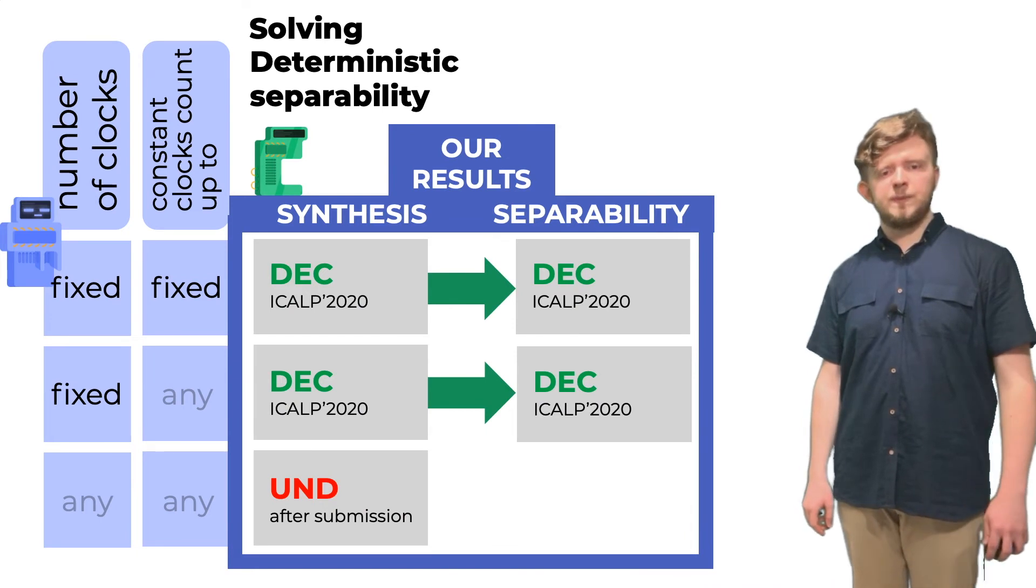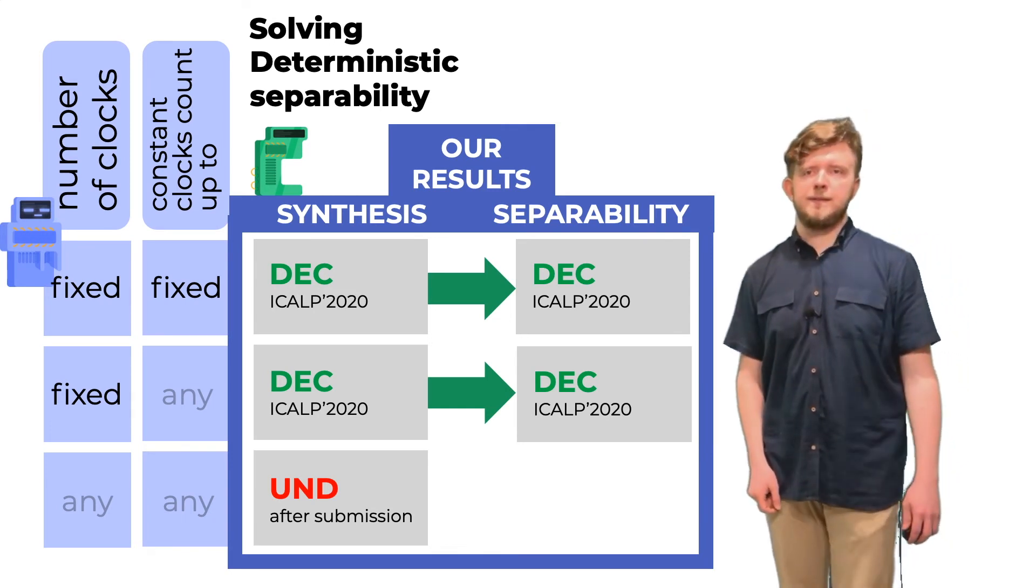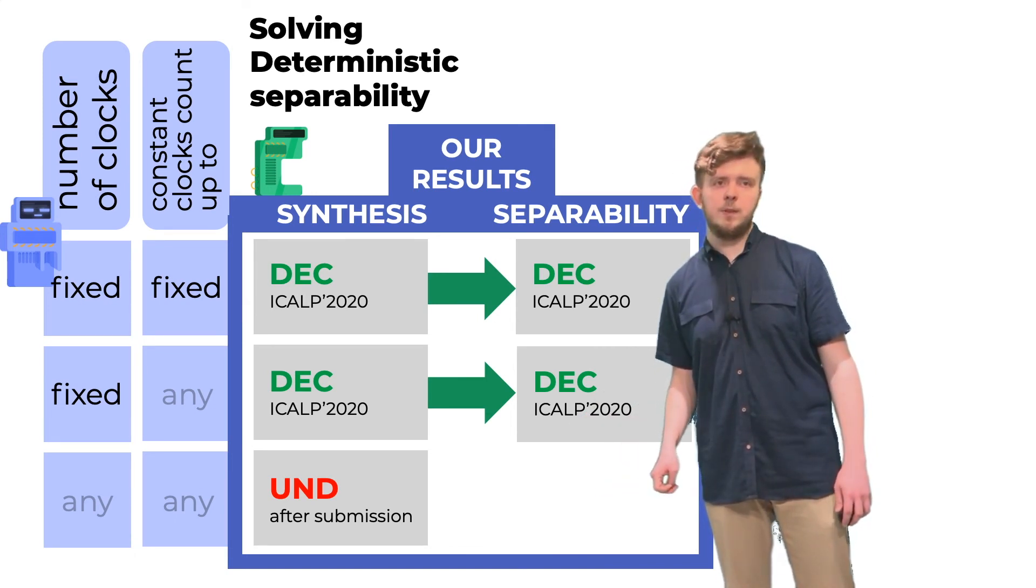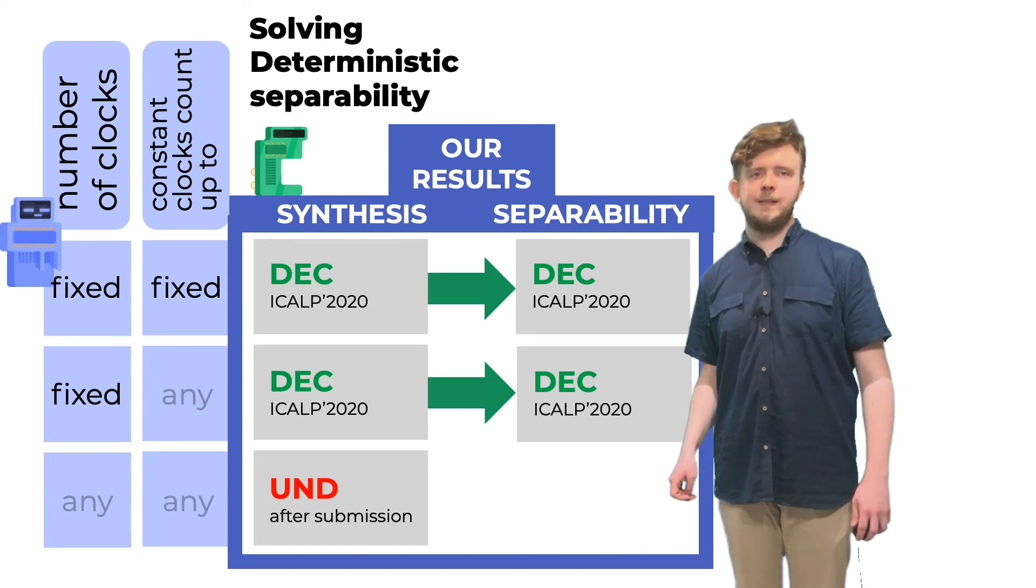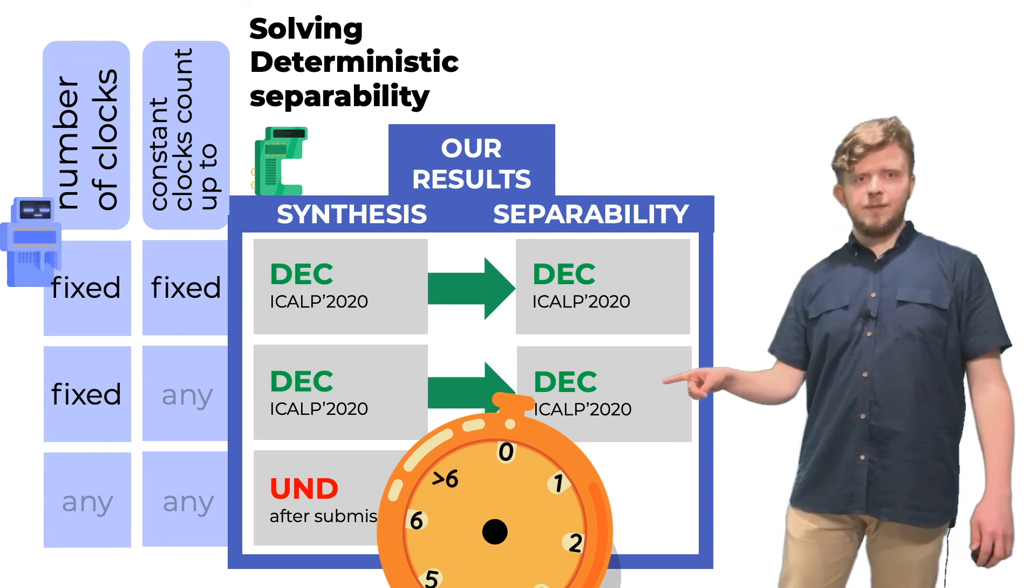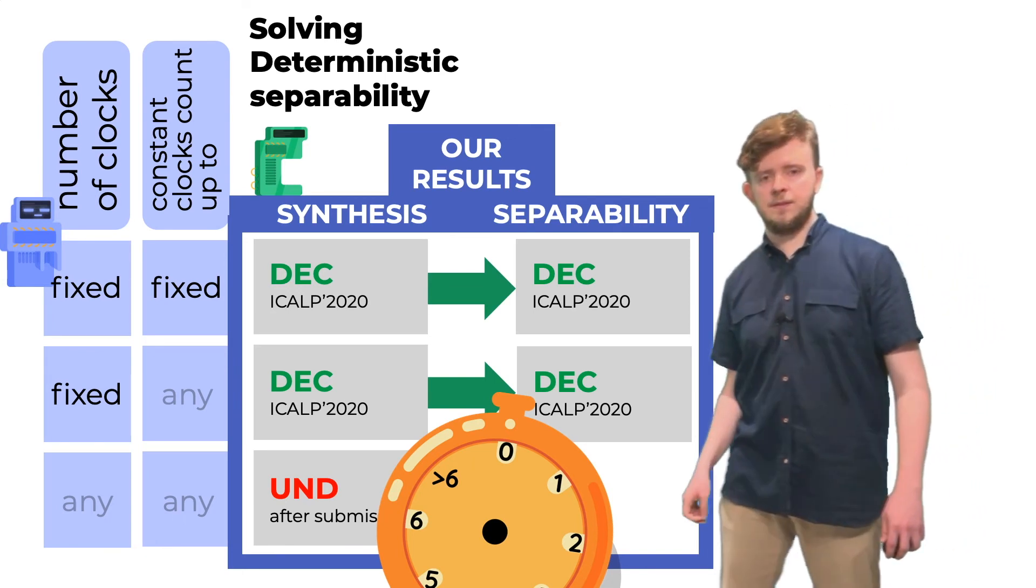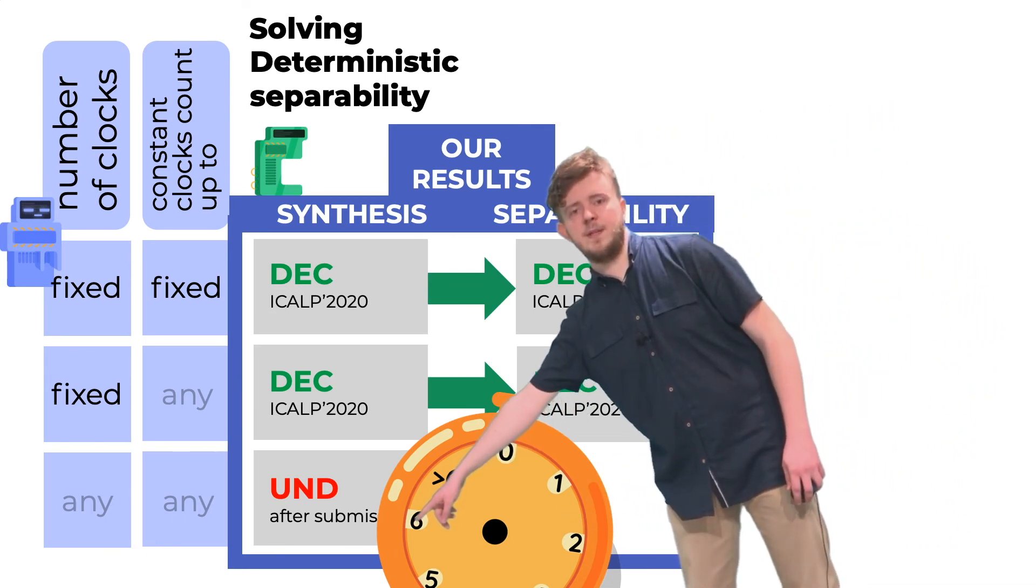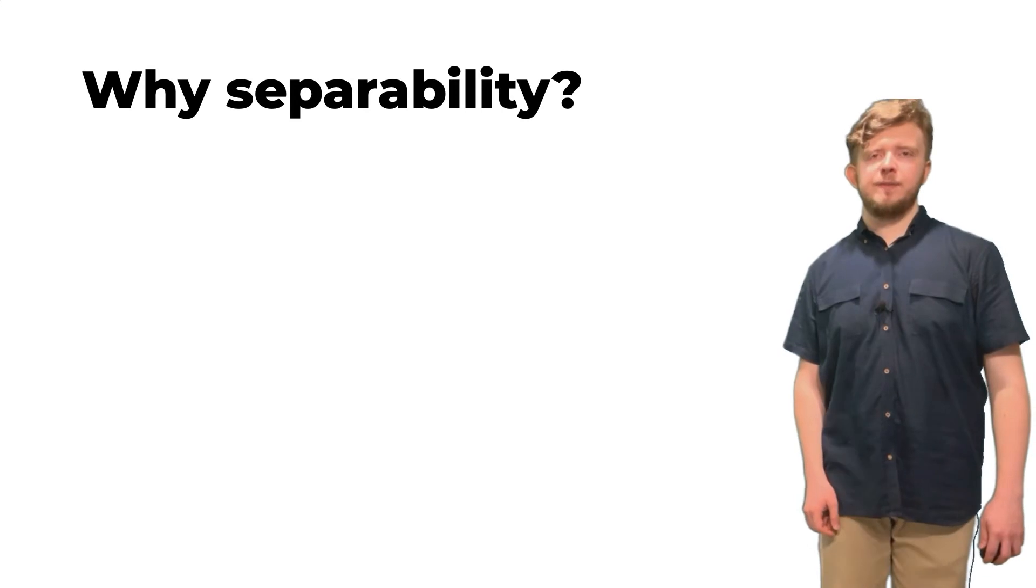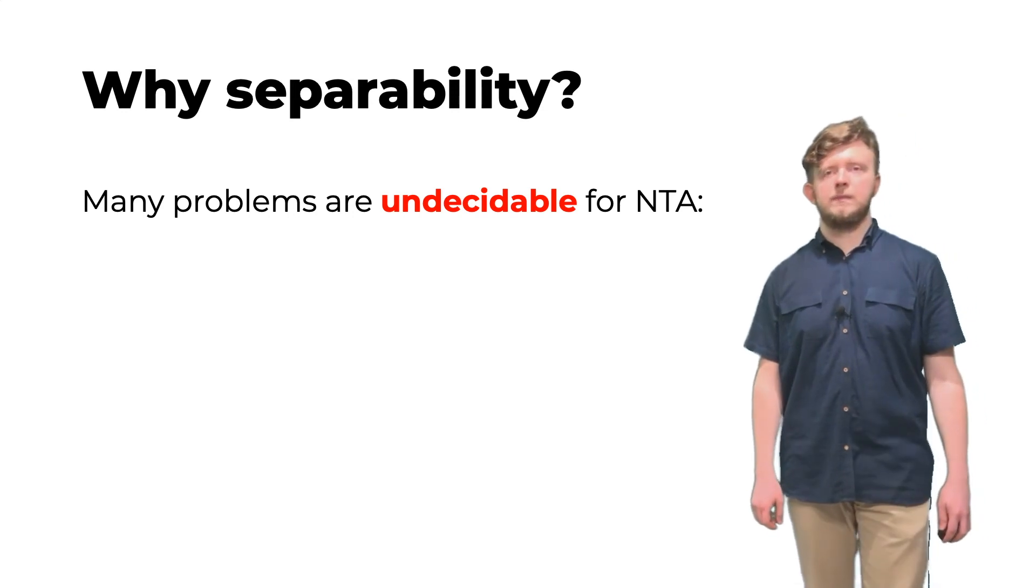Note that here the open problem is this – the separability without fixing the resources. Why is so? Our undecidability for games does not transfer to the separability question, and we don't know any techniques other than games that the separability reduces to. For me, the second decidability result here is more interesting, because we don't need to specify the constant for clocks in advance. For example, we don't need to specify the constant 6. You may wonder why we think the separability is interesting.